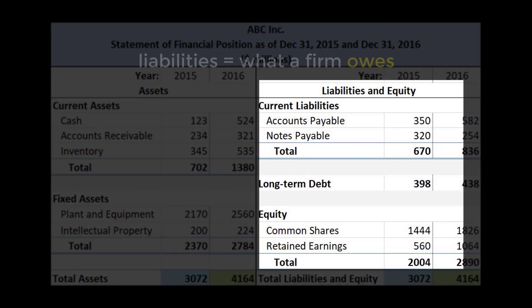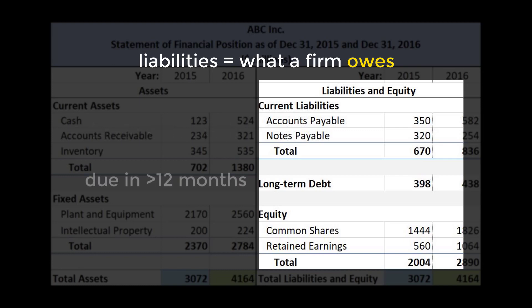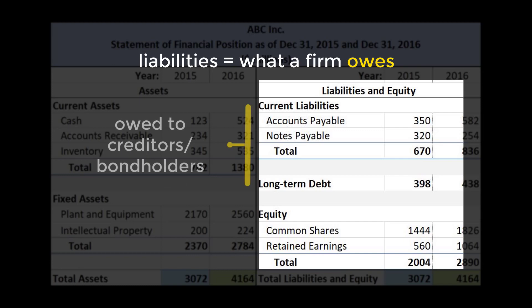Liabilities, on the other hand, are what a firm owes. Just like there are current and fixed assets, there are current liabilities and long-term debt. Current liabilities are debts that come due within 12 months, and long-term debts are debts that must be repaid at some time after 12 months. People that have loaned the company money are known as creditors or bondholders.